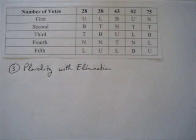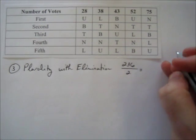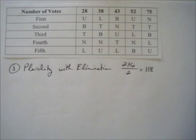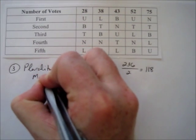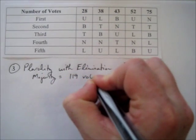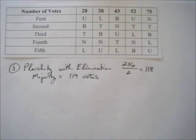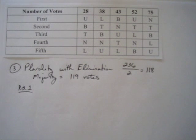Now we're on to the plurality with elimination method — round-by-round voting until one candidate receives a majority. First, we calculate what a majority consists of. There were 236 total votes, so 236 divided by 2 is 118. A majority requires one more than half, so 119 votes constitute a majority.